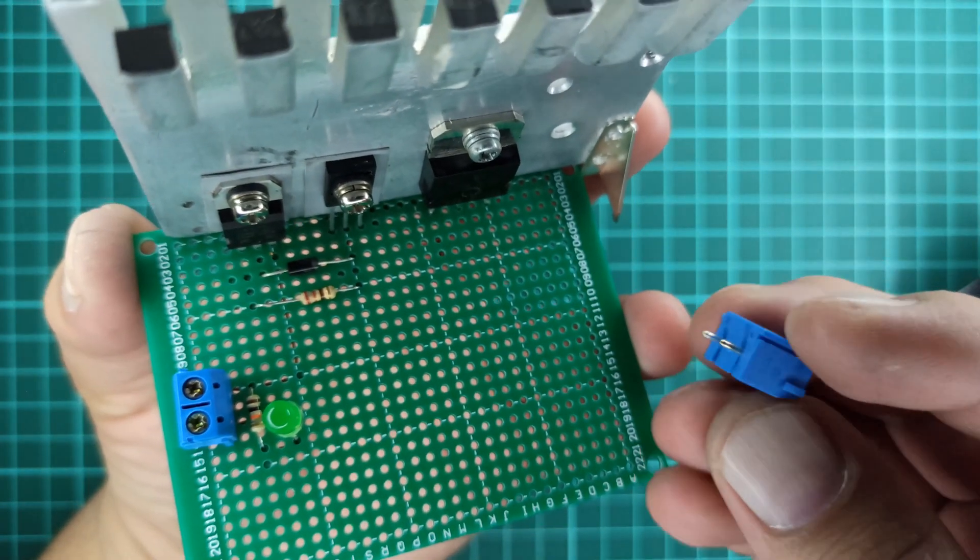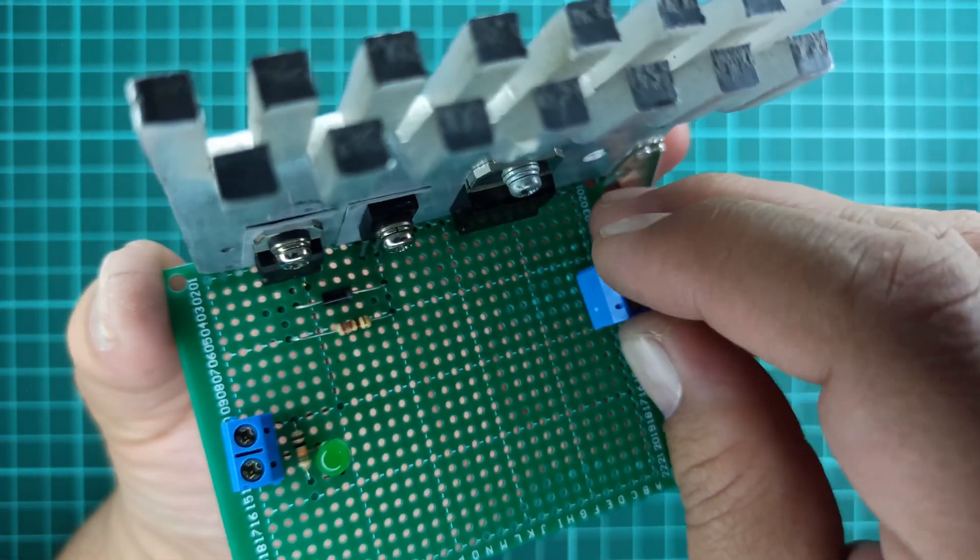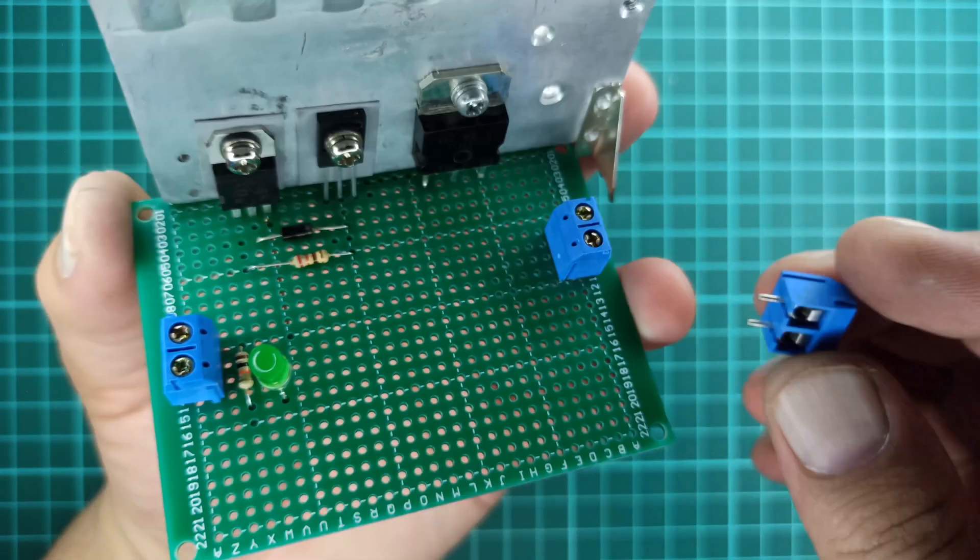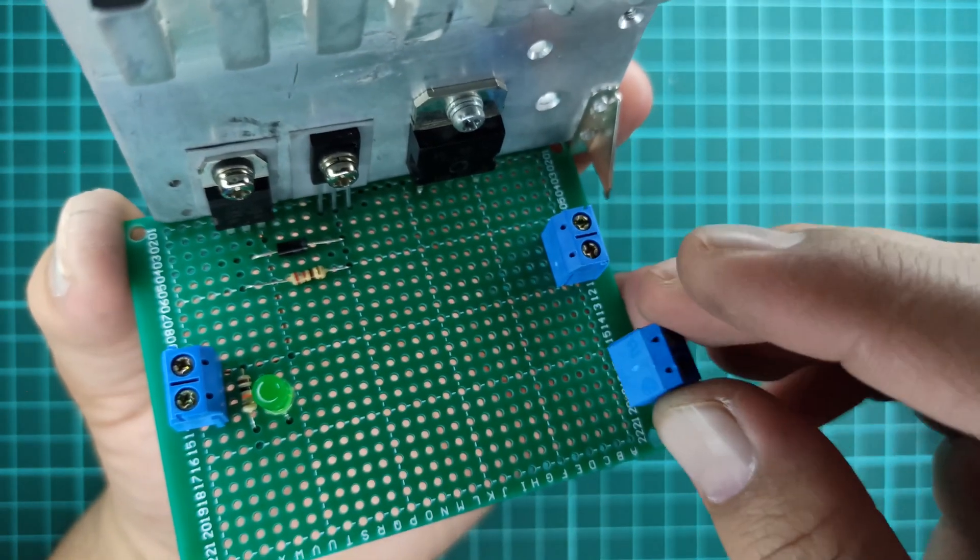Now take a pair of two-pin block connectors and solder it on the other side of the PCB board for ampere meter and output connection respectively.